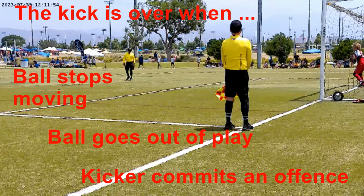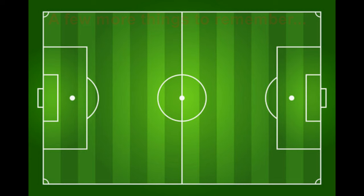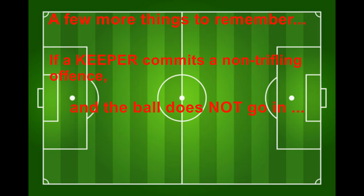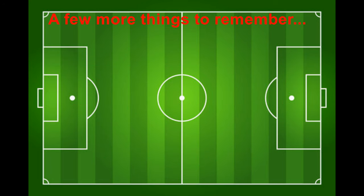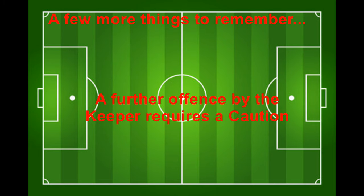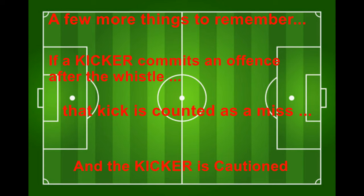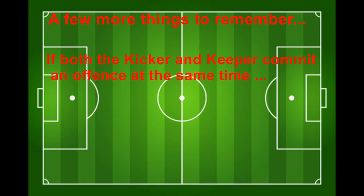The kicker cannot play the ball a second time. If the keeper commits an offense but the ball goes in, it's a goal. If the keeper commits a non-trifling offense and the ball does not go in, the keeper is warned and the kick is retaken. A further offense by the keeper requires a caution. If the kicker commits an offense after the initiation whistle, that kick is counted as a miss and the kicker is cautioned. If both the kicker and the keeper commit an offense at the same time, the kick is counted as a miss and the kicker is cautioned.